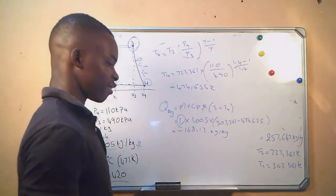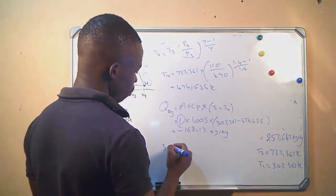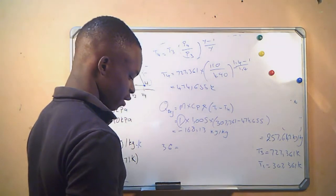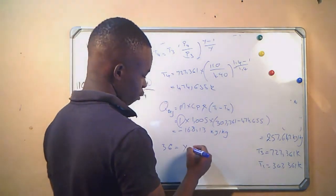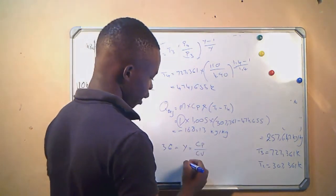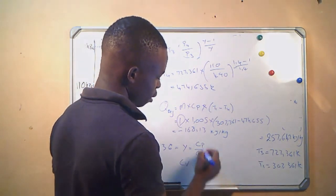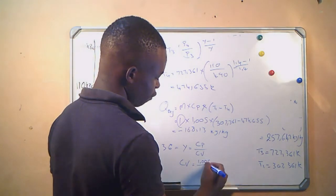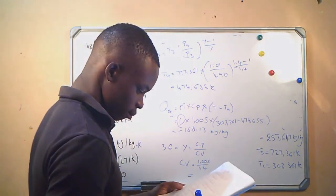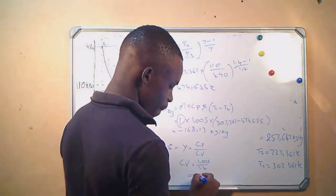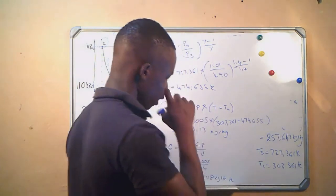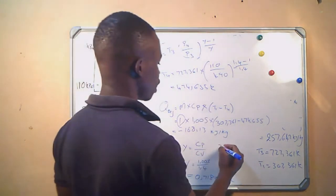Question 6: Calculate the value of CV. We use the relationship gamma = Cp / CV. Rearranging: CV = Cp / gamma = 1.005 / 1.4, which gives CV = 0.718 kJ/kg·K.